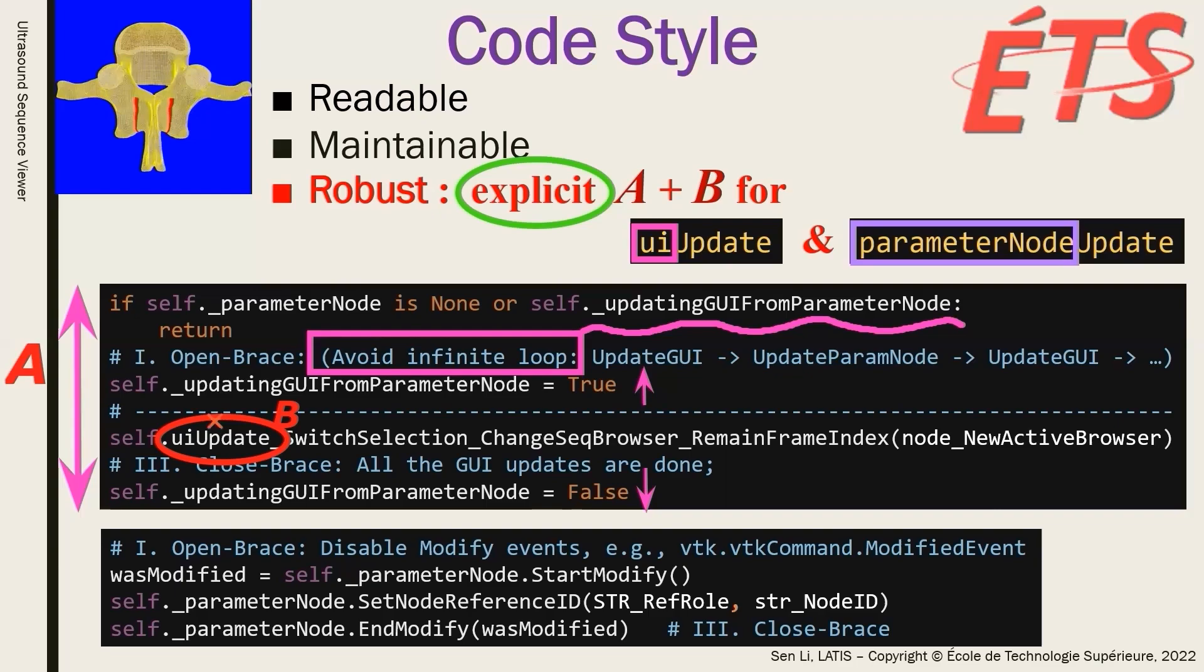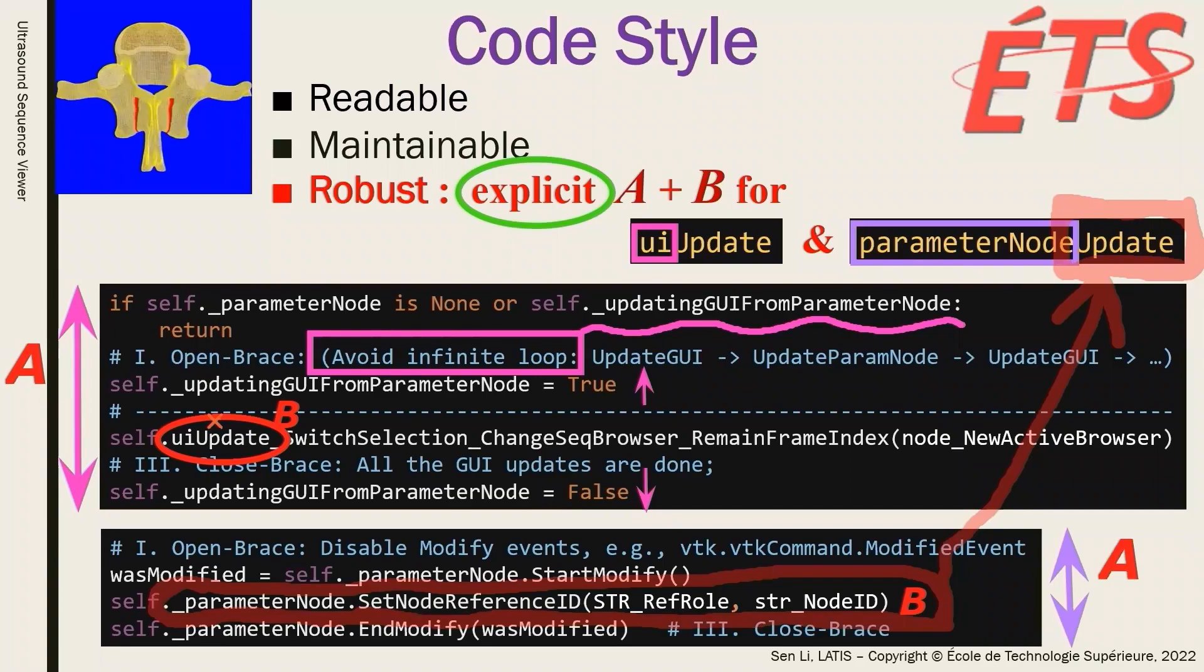Similarly, there are two groups of functions related to the update of parameter node. Each function from the group capital beta has a function name starting with parameter node update underscore, and each function from capital alpha will open a brace, call function beta, and then close the brace. Capital alpha must switch the brace, and capital beta must not touch the brace. This is an important rule to avoid infinite loops.